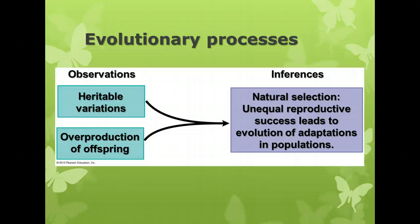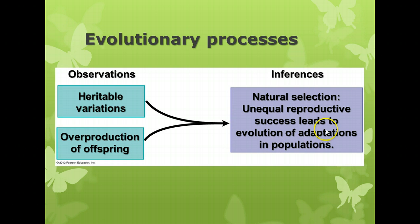The processes that occur in evolution include heritable variations, and most species produce far more offspring than can survive. Turtles produce many more eggs than will grow into adult turtles — some eggs get eaten, some don't make it from hatching to the ocean, and once in the ocean some are eaten before they develop. Natural selection occurs because of unequal reproductive success, leading to adaptation of populations. Baby turtles with the most advantageous characteristics pass those adaptations to their offspring, giving them higher reproductive success over time.